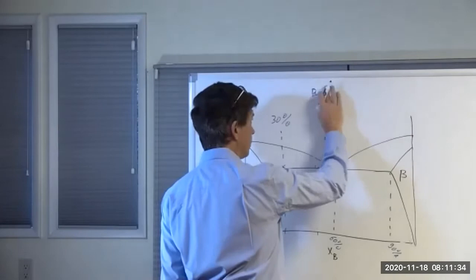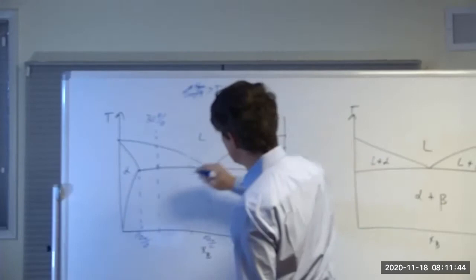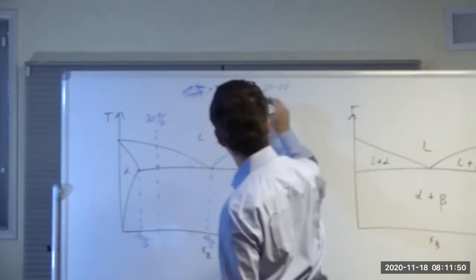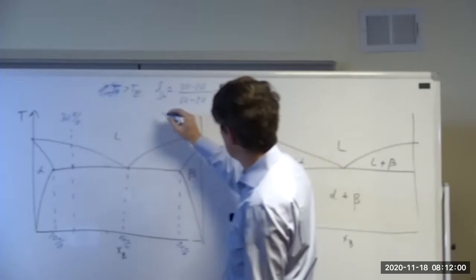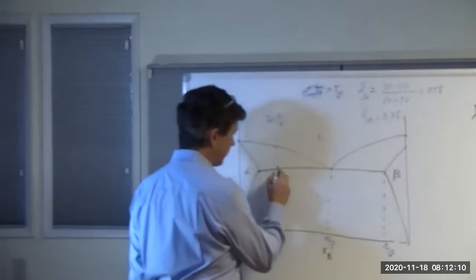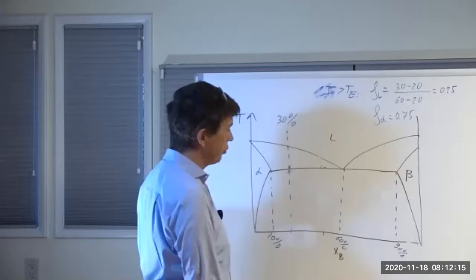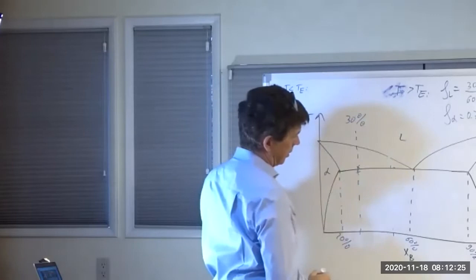Just above the eutectic temperature, you can figure out from the lever rule how much liquid you have. The fraction of liquid would be 30% minus 20% divided by 60% minus 20%, which is 10 divided by 40, so 0.25. That means the fraction of alpha is 0.75. Now if you want to know what happens at the eutectic temperature, redo that exercise just below the eutectic — you're in a two-phase region between alpha and beta.